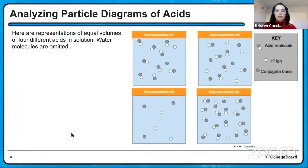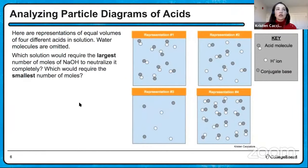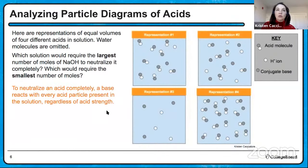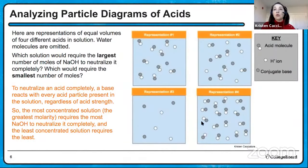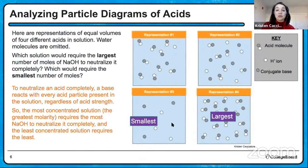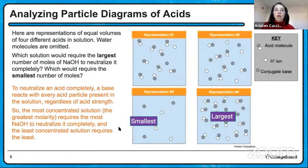Now, which solution would require the largest number of moles of sodium hydroxide to neutralize it, and which would require the smallest? To neutralize an acid completely, a base reacts with every acid particle present, regardless of whether it's weak or strong. We need to figure out which solution is the most concentrated in terms of total acid particles. Representation four has the largest concentration and will require the most sodium hydroxide. Representation three has the smallest concentration — the fewest acid molecules — so it requires the least.